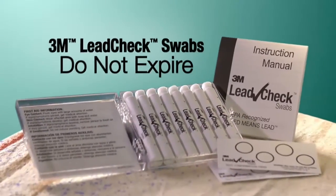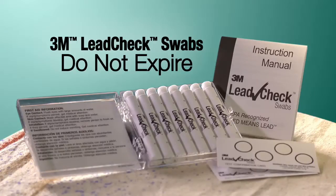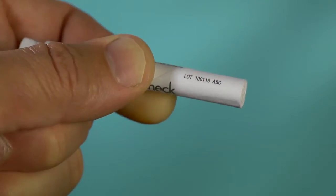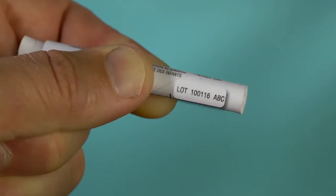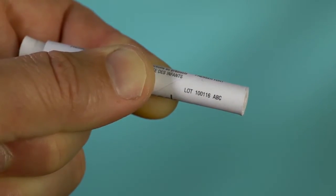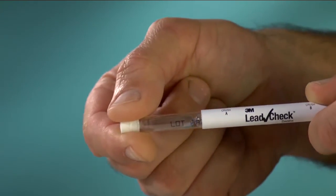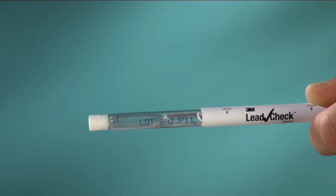3M LeadCheck swabs do not expire, so when filling out the EPA form, use the lot number shown on the swab in the expiration date field. The lot number can be found on the cardboard cover or on the plastic tube underneath the cardboard cover.